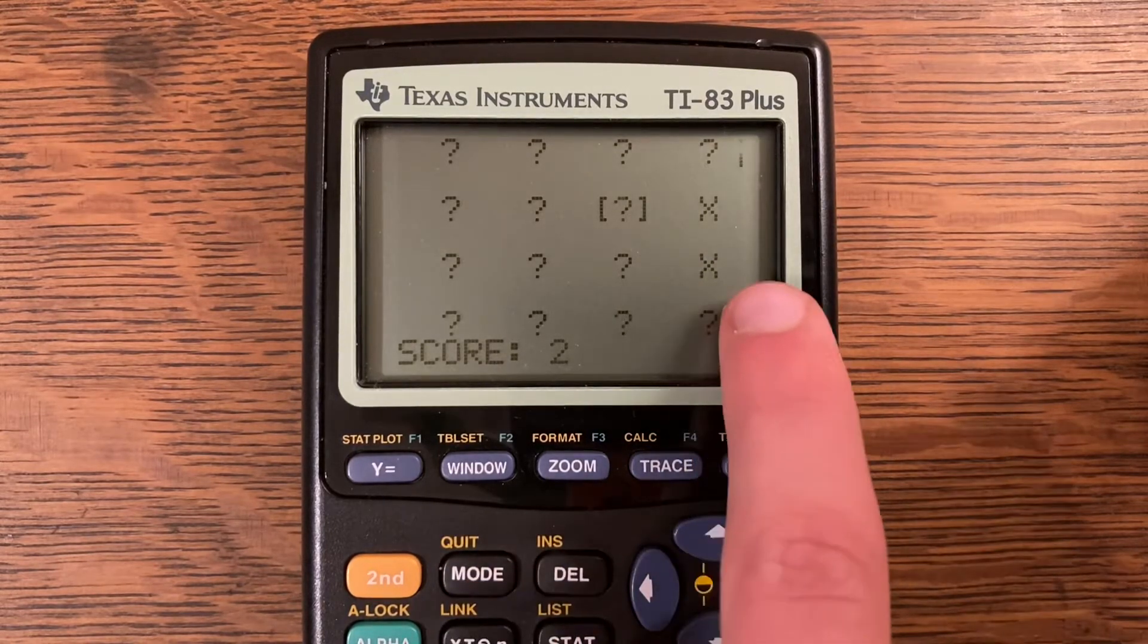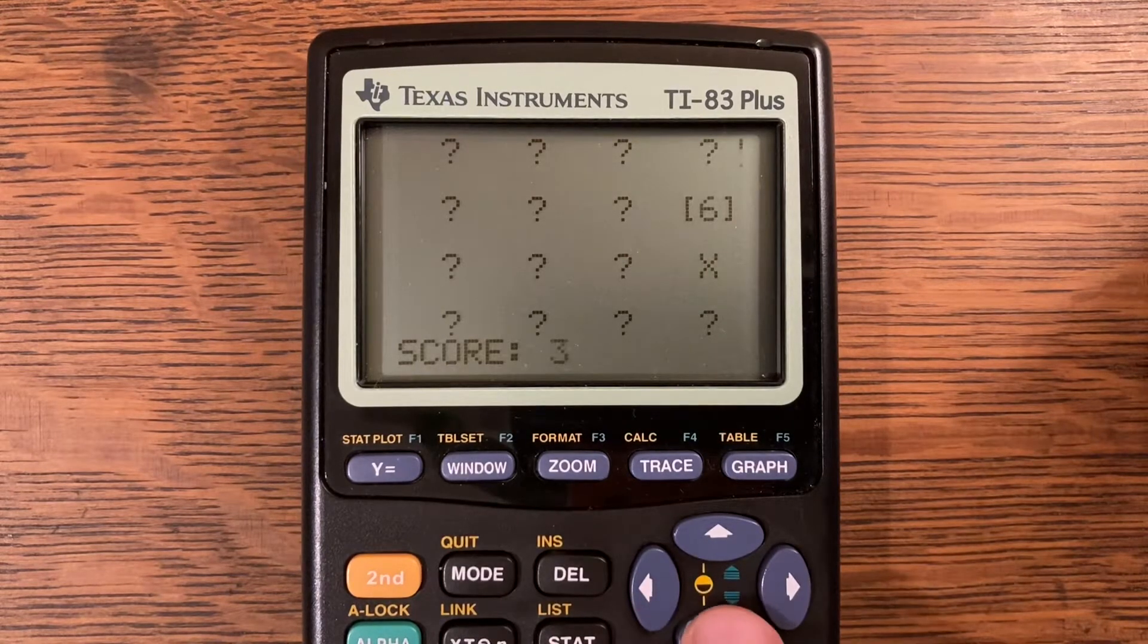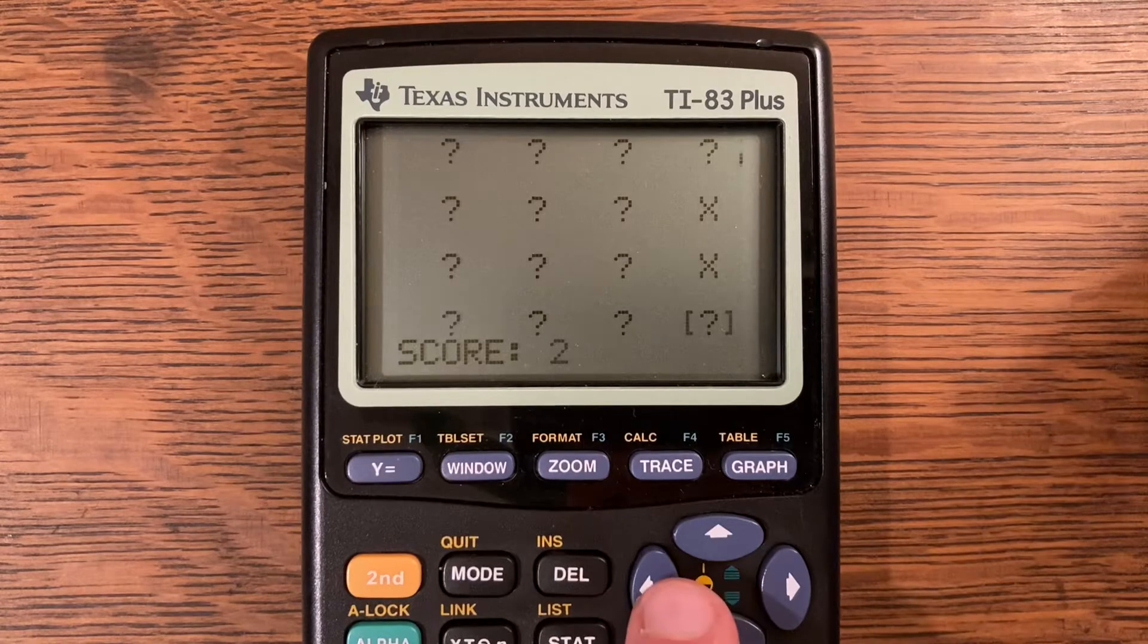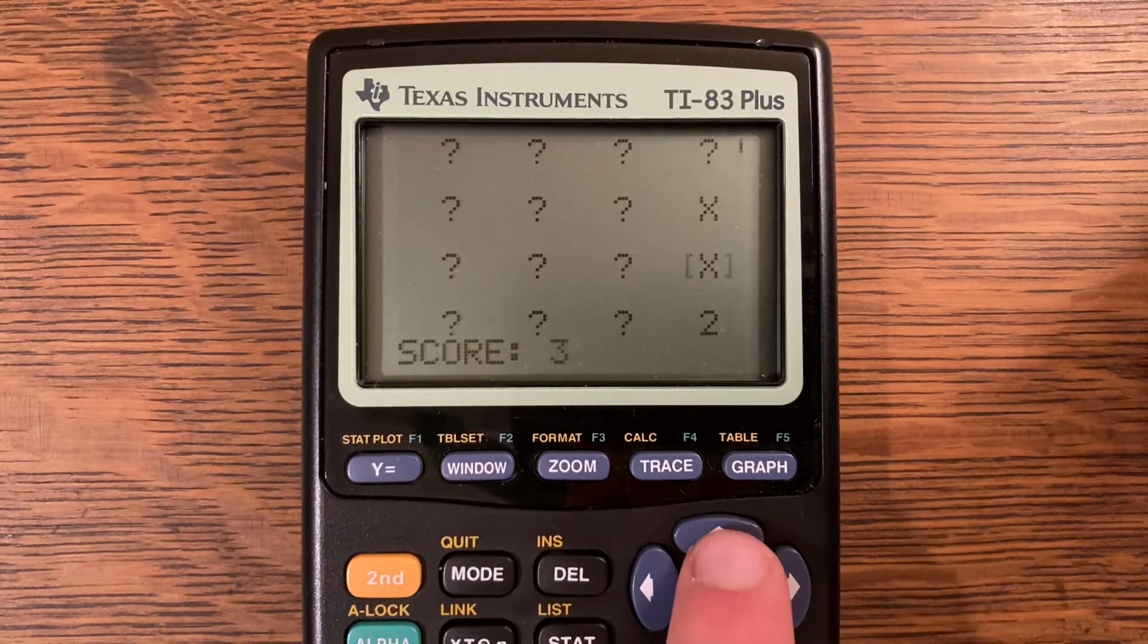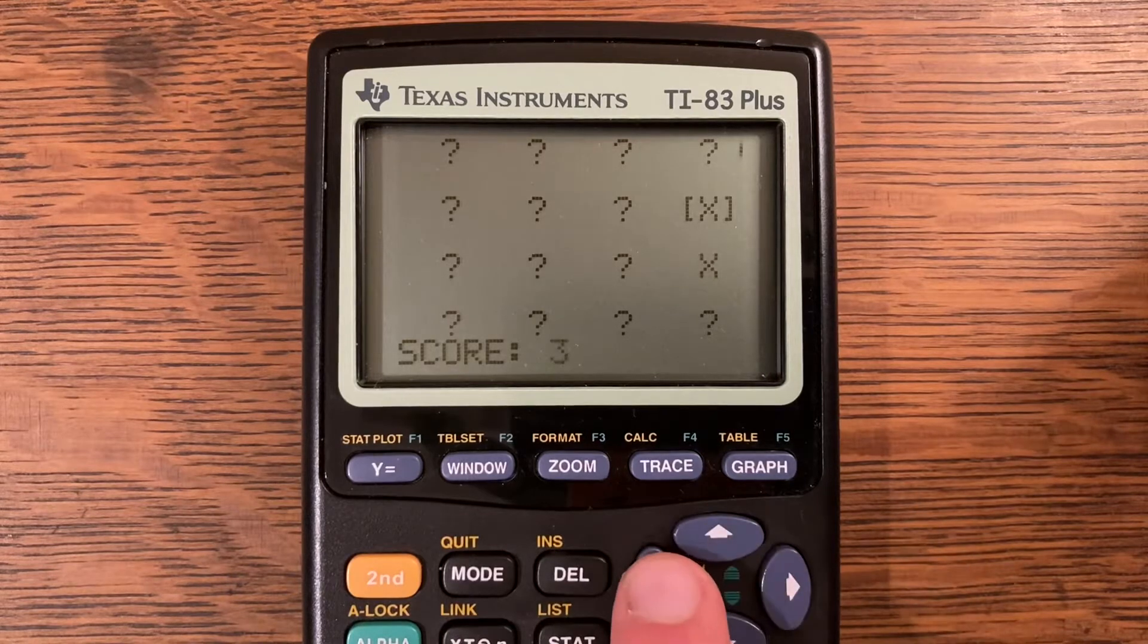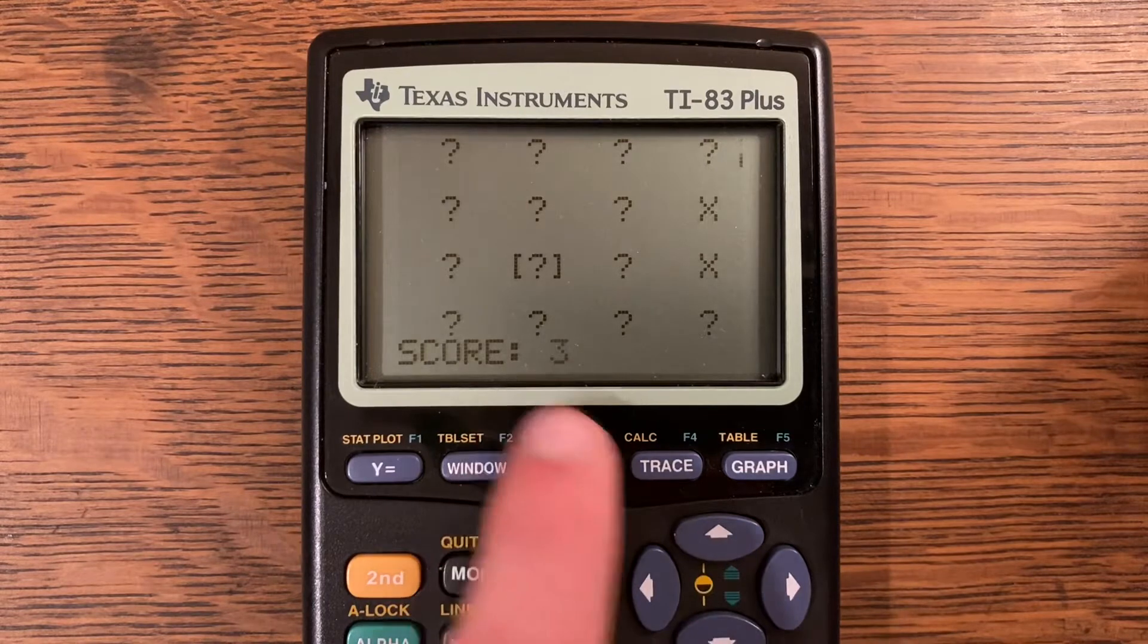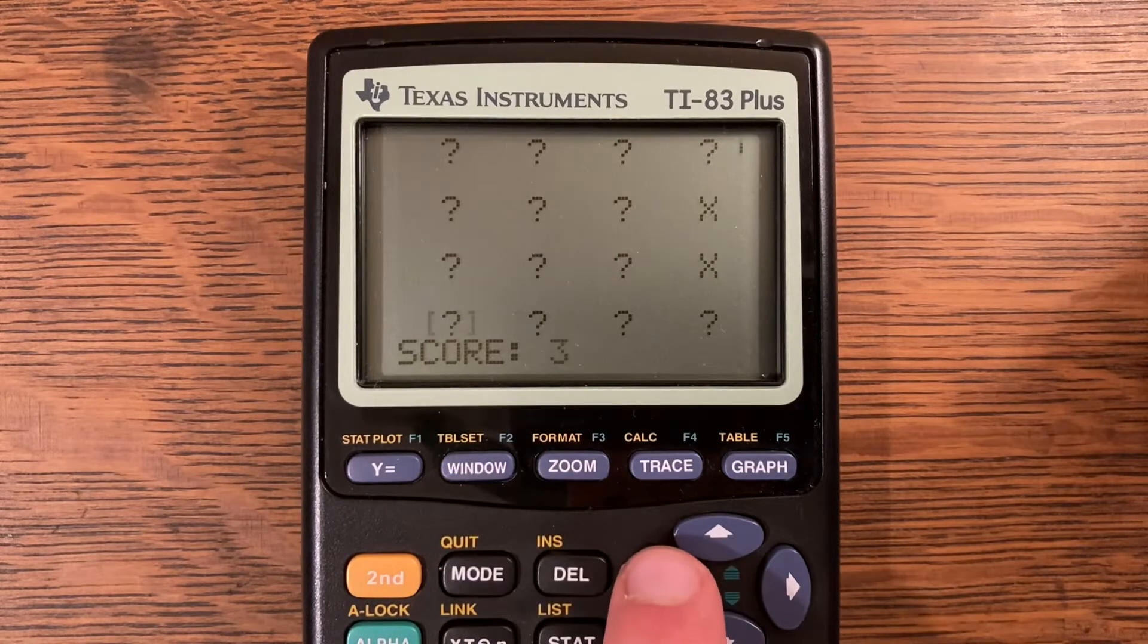When you get a match, X's go over it. You want to be careful because you can still select on the X's, so if I select this one and then the X, it will go back to a question mark. There's no penalty for time limit or anything, you just want to have the lowest score possible.